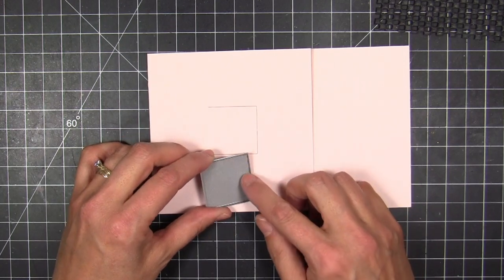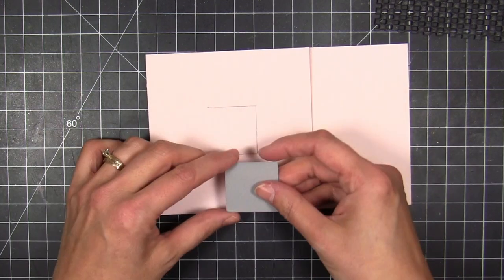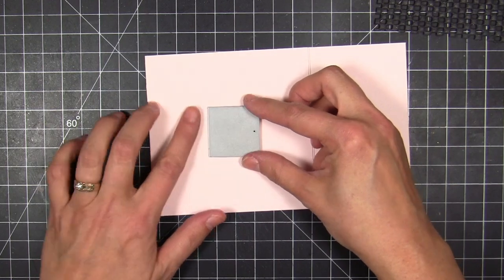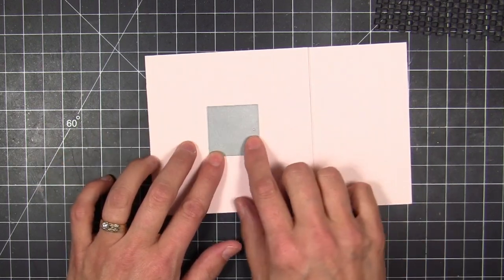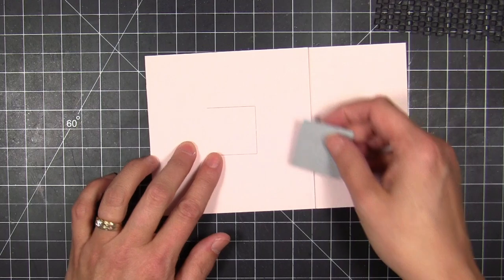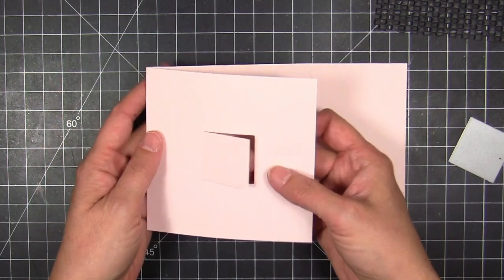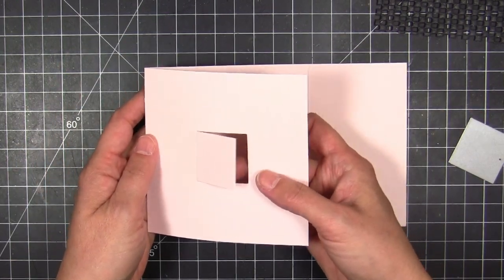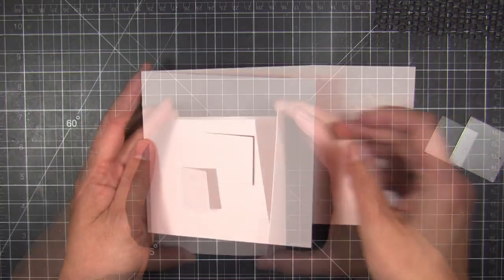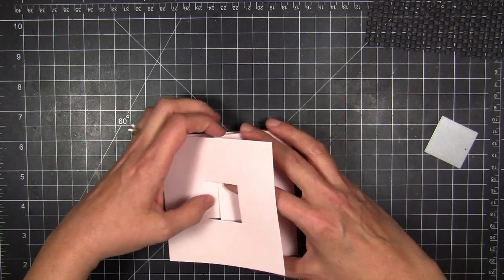And I just wanted to show you on the die how it has that score line on the one side and then the other three edges cut, and this is the way that I lined up the score line of the die with the pencil line on the front of the card. So now you can see I have my little window with the door.